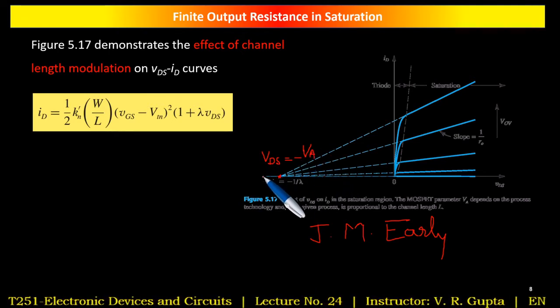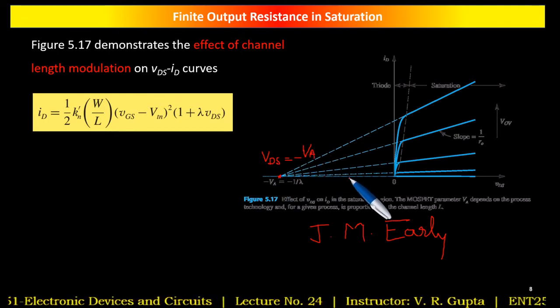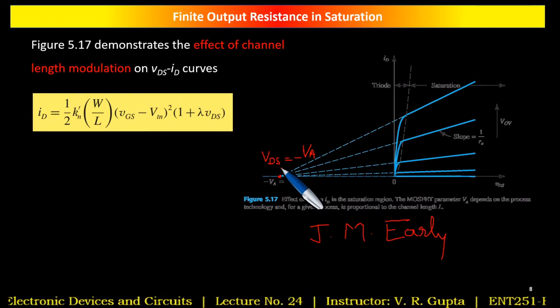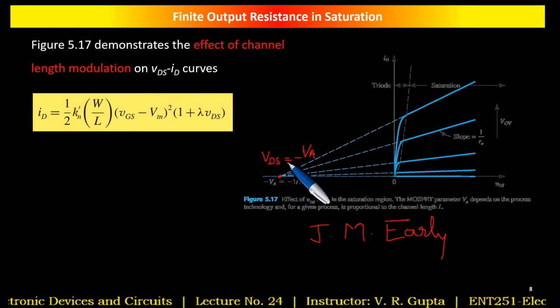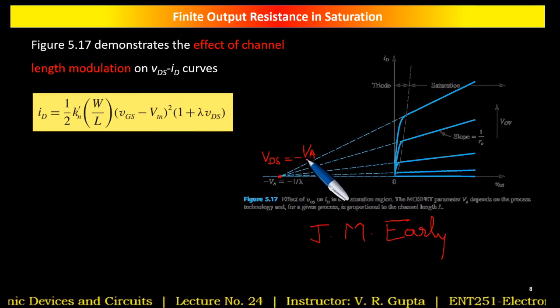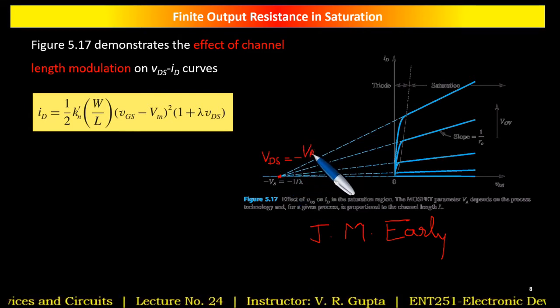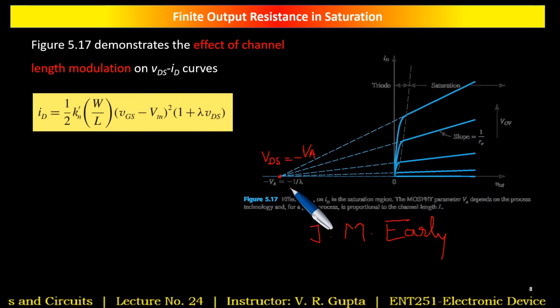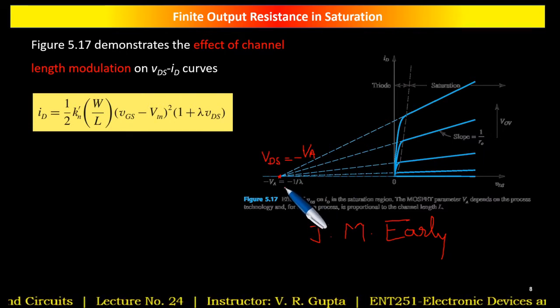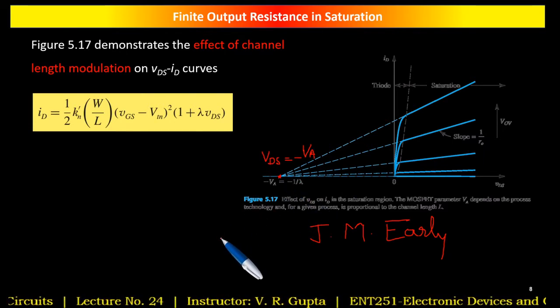VA is a positive quantity. The minus sign appears because that intercept is on the negative VDS axis, so VDS at that point equals minus VA, where VA is positive. The relationship VA = 1/λ will be derived next.